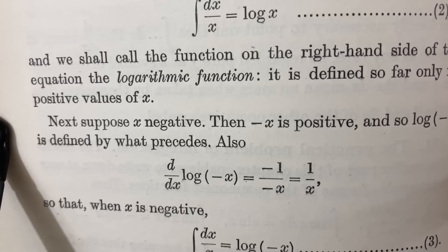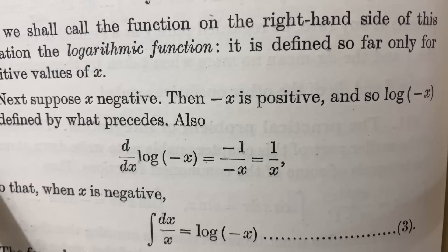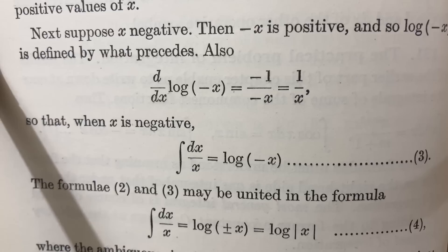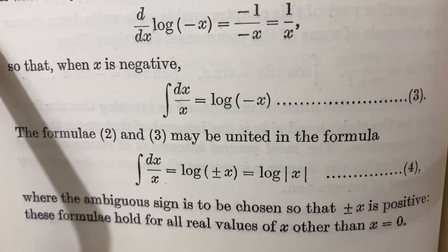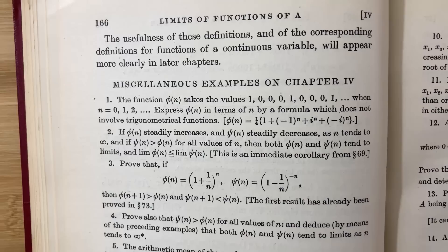Also, if you take the derivative, using the chain rule, you're going to get 1 over x. So that when x is negative, the integral becomes log of negative x. The formulae 2 and 3 may be united in the formula. The integral of 1 over x with respect to x is equal to the logarithm of the absolute value of x, where the ambiguous sign is to be chosen so that plus or minus x is positive. These formulae hold for all real values of x other than x equals 0.